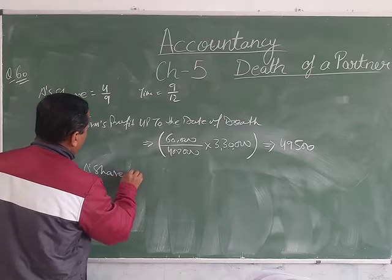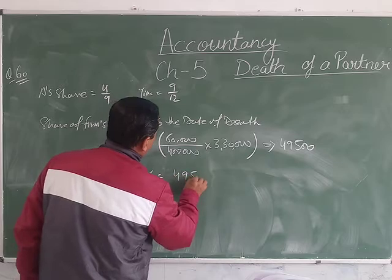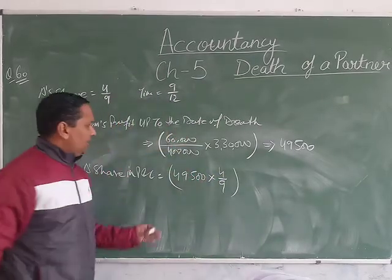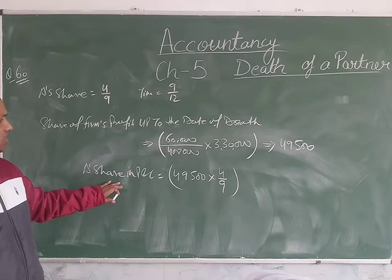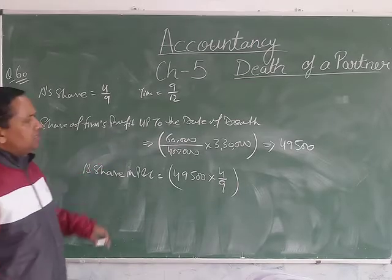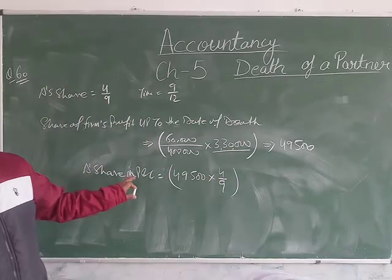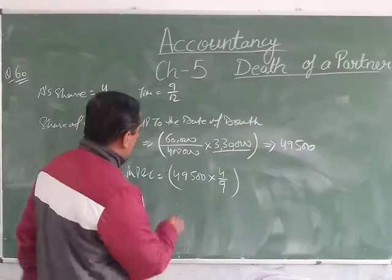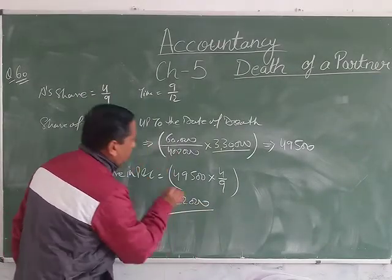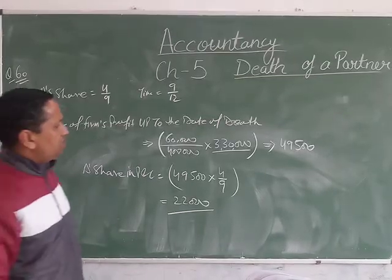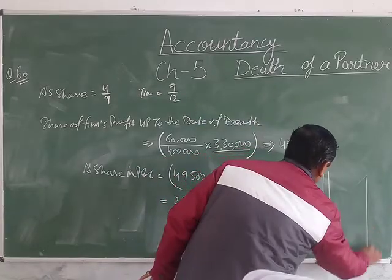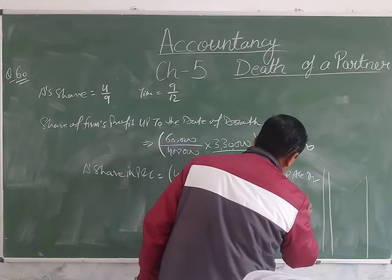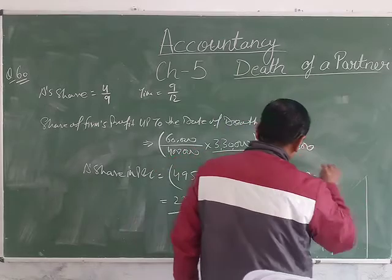A's share in Profit and Loss is equal to 49,500 multiplied by A's share of 4/9. Students ask why we are not putting the time period here — because the sale is already given up to the date of death, so there is no need to apply time when profit is calculated on the basis of sales. The calculated profit, A's share, is 22,000. The journal entry passed is: Profit and Loss Suspense Account Dr. to A's Capital Account — 22,000.